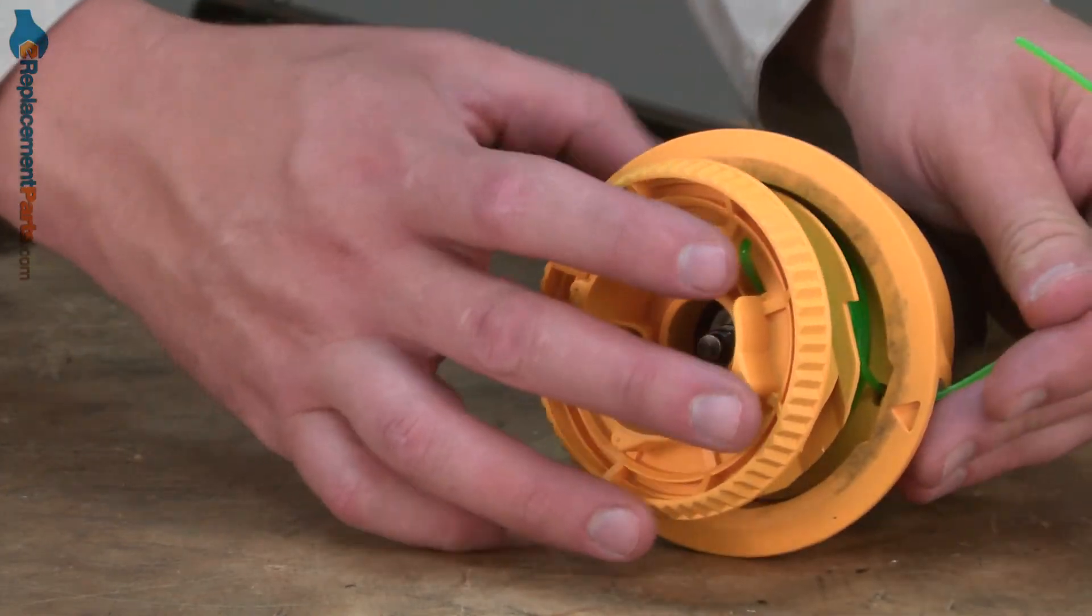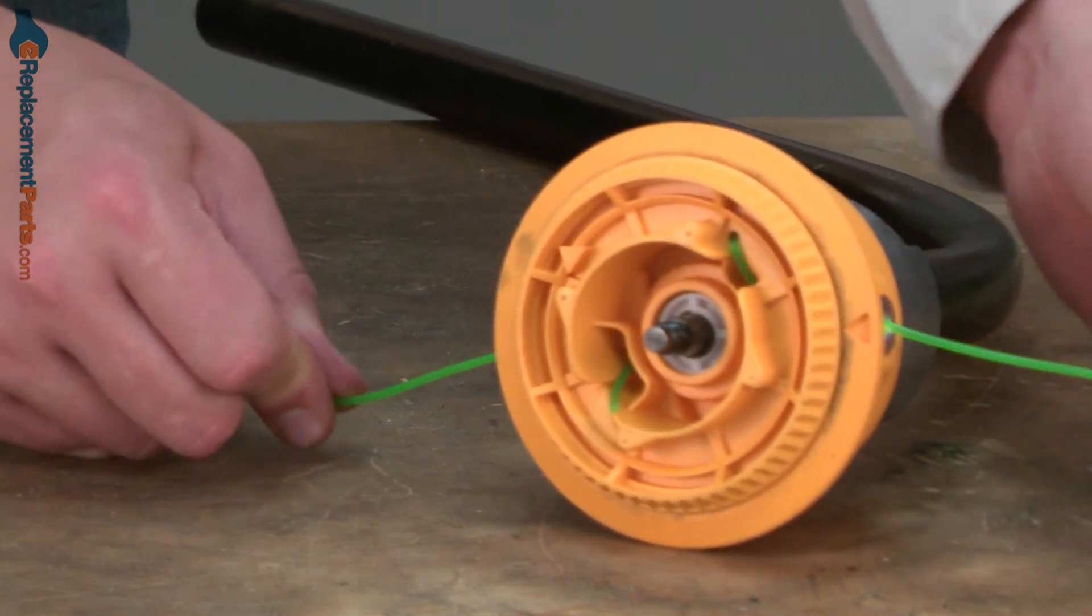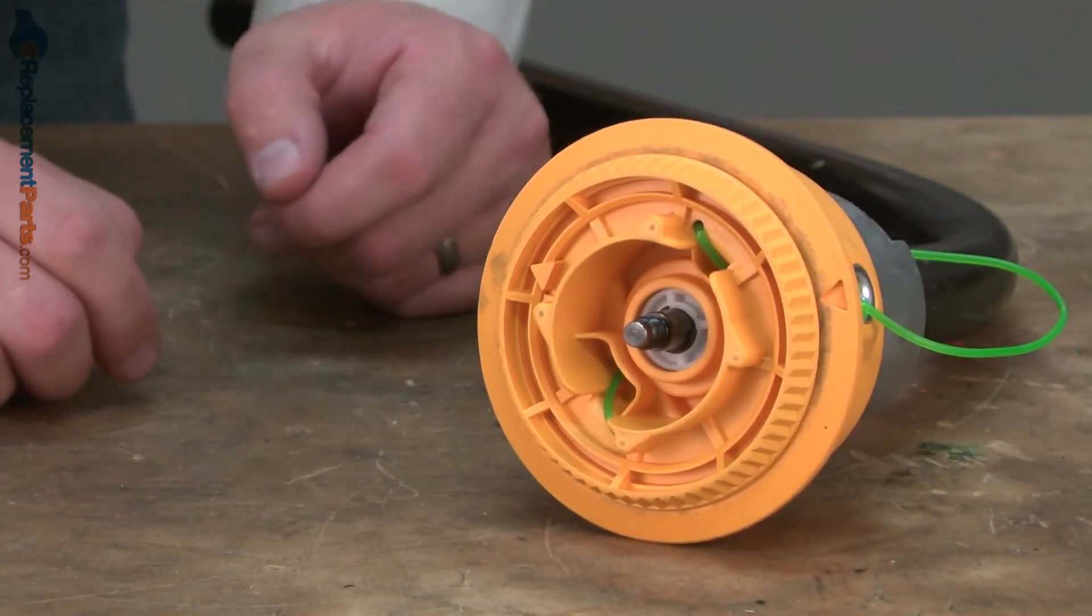And then slide the head over the shaft. Once in place I'll give a tug on the lines and that's to pull them away from those temporary clips.